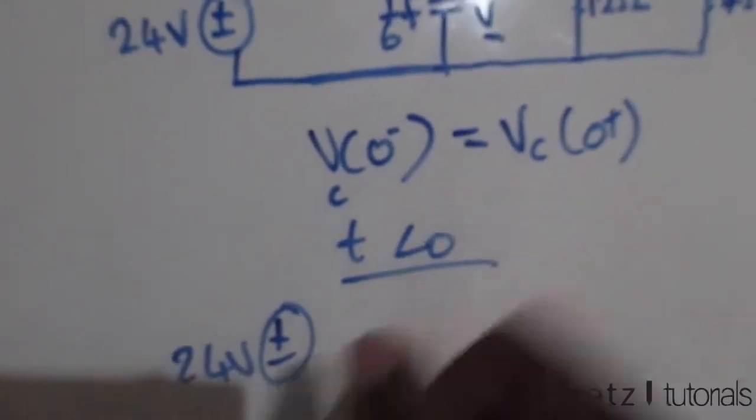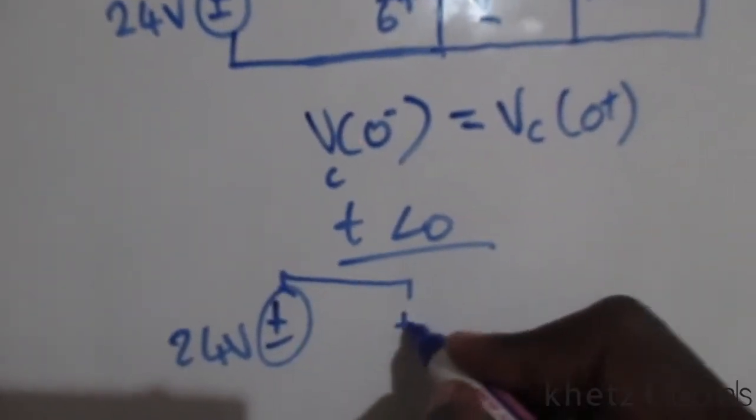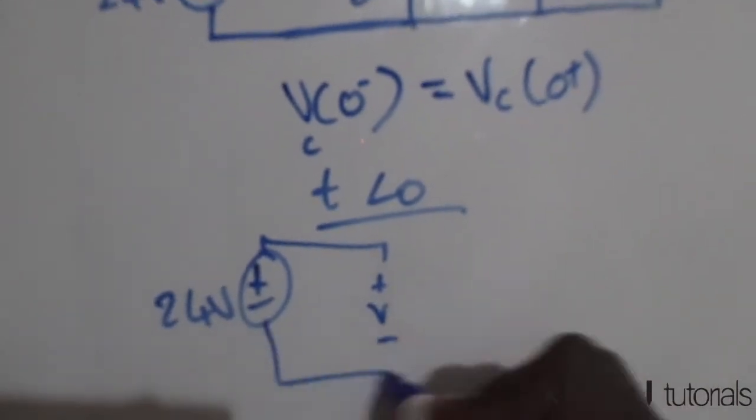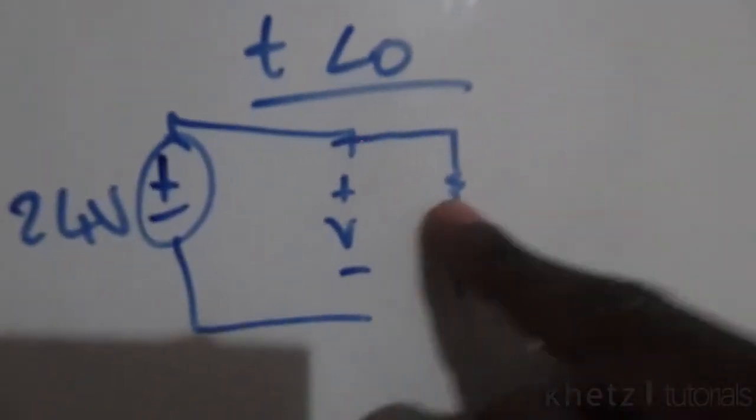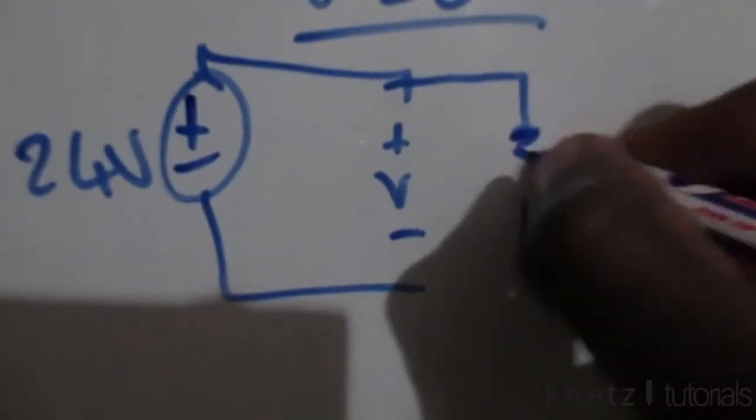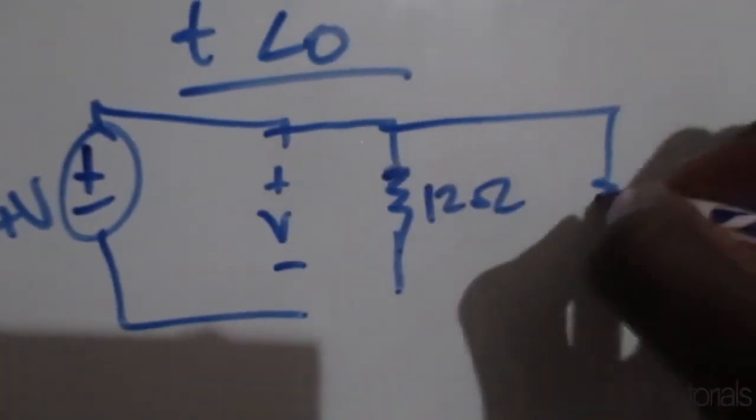We have this open circuit over here with that voltage indicated across, and then we have the 12 ohms on this side, the 12 ohms, then we have the 4 ohms.